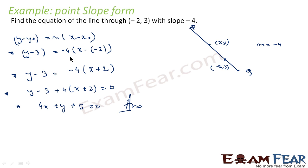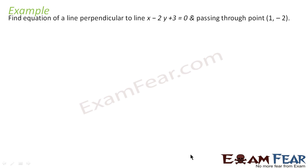What we have done? We used the formula y minus y0 is equal to m into x minus x0. We were given the values of m, y0, and x0. We put in the values and got the equation 4x plus y plus 5 is equal to 0.